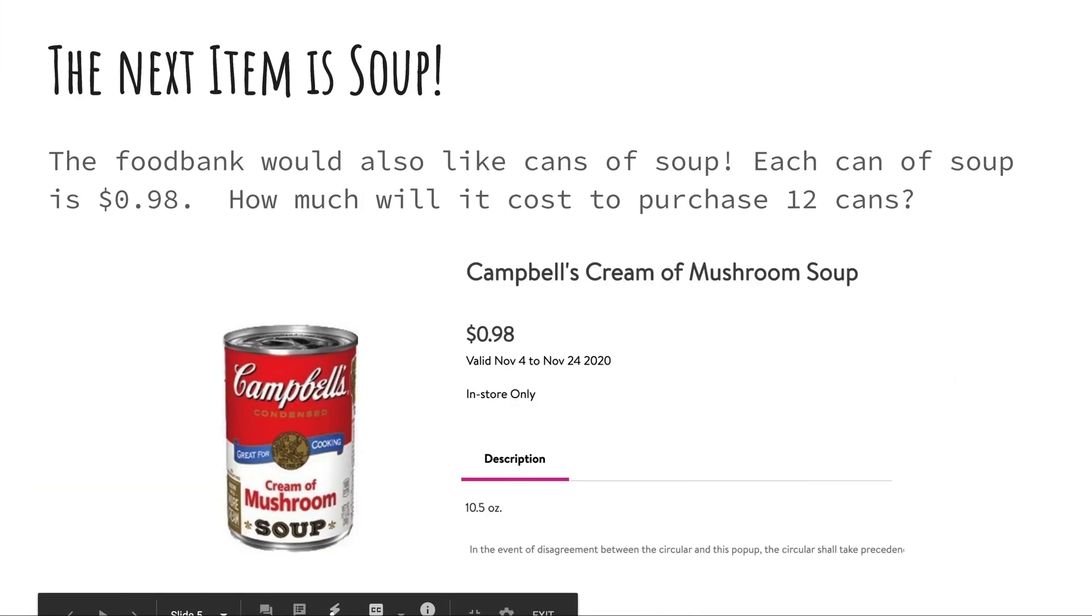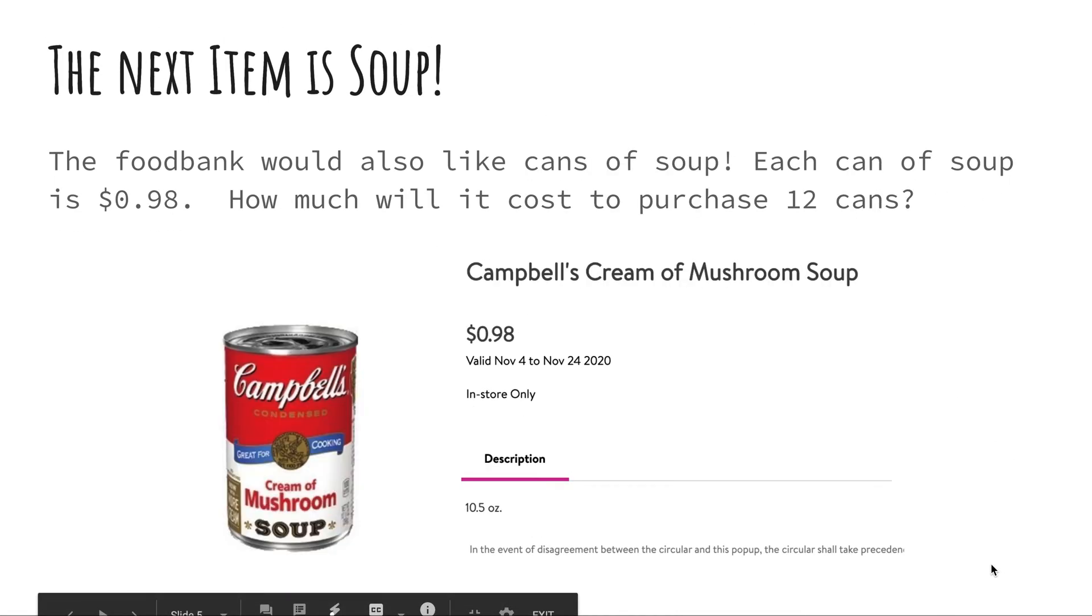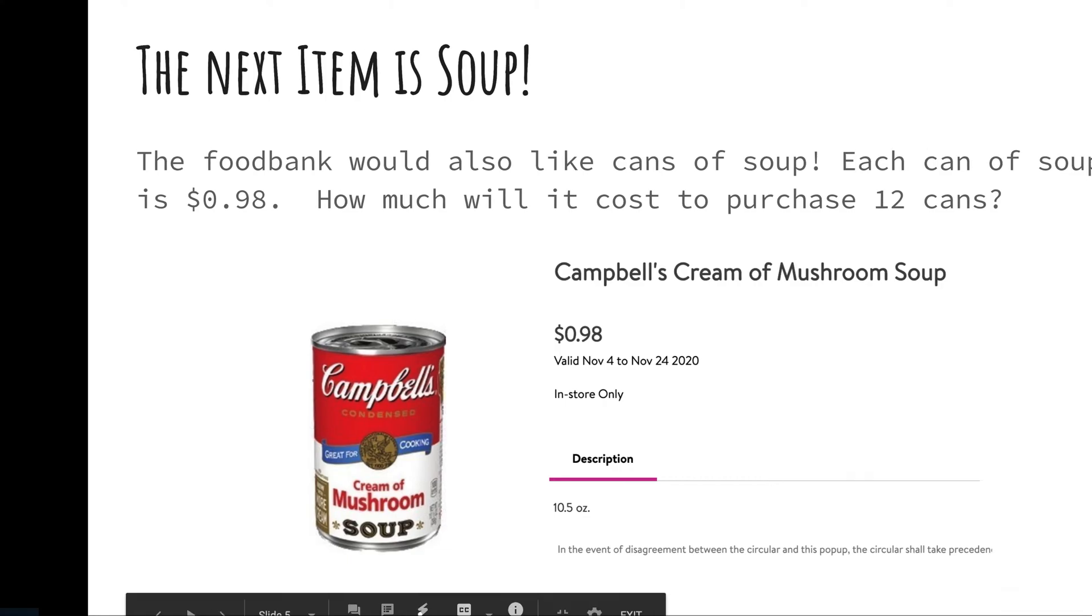Okay, let's go on to our next item now. Now the next item is soup. Lots of people like to use cream of mushroom soup for different things that they bake on Thanksgiving, and the food bank would love for us to have cans of soup for them. Now notice each can of soup is 98 cents. There's that key clue word of each again. How much will it cost to purchase 12 cans? So go ahead and take 98 cents times 12.